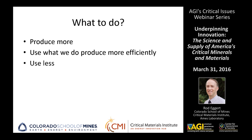That leads to the question of what to do — what should we do to assure supply chains? Fundamentally, there are three solutions to supply chain risks: produce more, use what we do produce more efficiently (in other words, waste less), and use less by developing substitute materials.